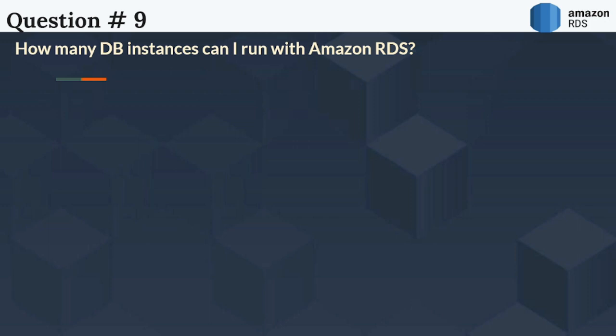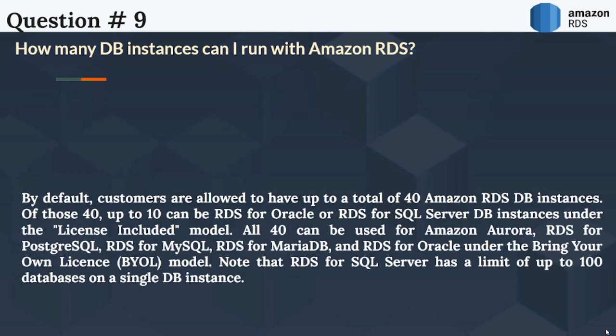The next question is: How many DB instances can I run with Amazon RDS? By default, customers are allowed to have up to a total of 40 Amazon RDS DB instances. Of those 40, up to 10 can be RDS for Oracle or RDS for SQL Server DB instances under the license-included model. All 40 can be used for Amazon Aurora, RDS for PostgreSQL, RDS for MySQL, RDS for MariaDB, and RDS for Oracle under the bring-your-own-license (BYOL) model.